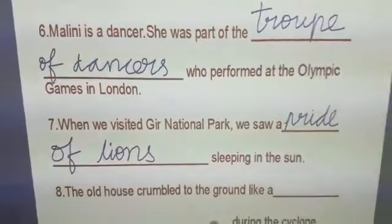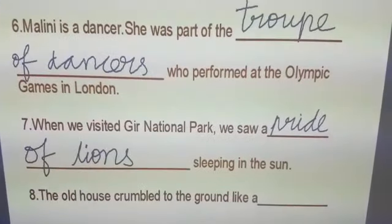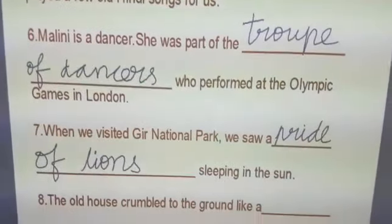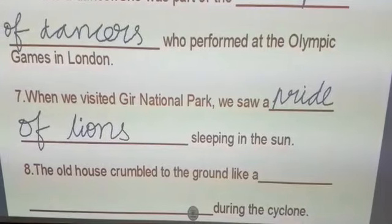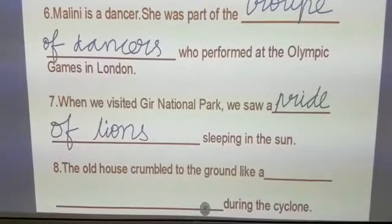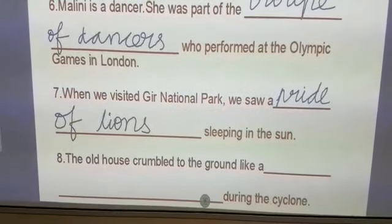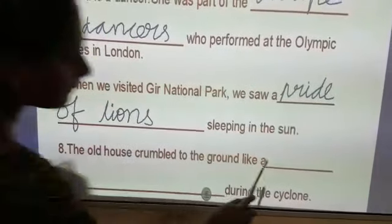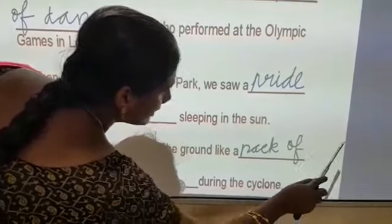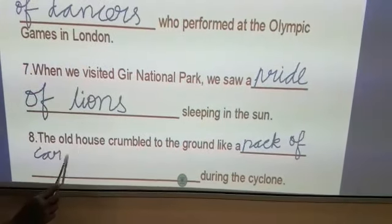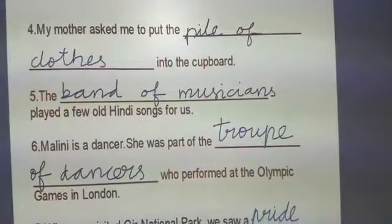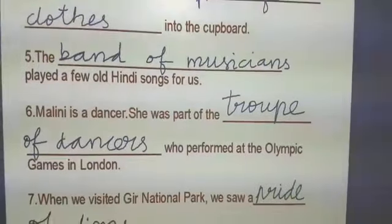Number eight: The whole house crumbled to the ground like a dash during the cyclone. Children, can you guess? During the cyclone, what happens? The house is destroyed. It crumbled to the ground like a pack of cards. P-A-C-K, pack of cards. All understood this collective noun? You can copy this in the textbooks, children. Thank you, children.